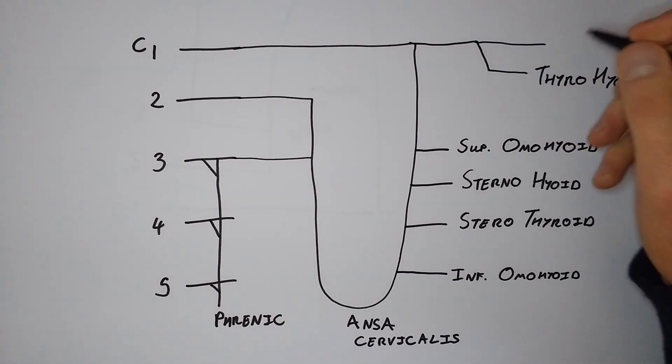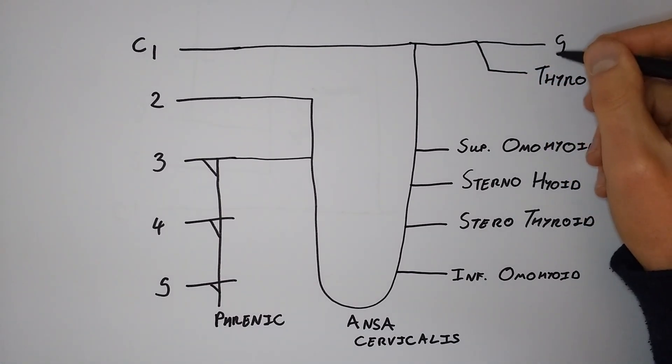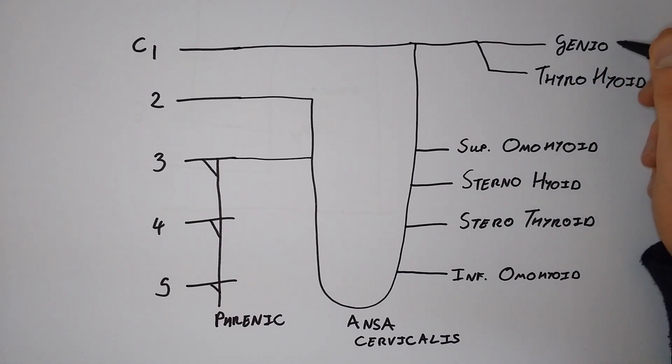Now there's only the suprahyoids. All suprahyoids are supplied by cranial nerves, save one supplied by the cervical plexus—that is the geniohyoid nerve. Now we've drawn all of the motor nerves of the plexus, so this is a good time to detail the association of the plexus to the cranial nerves.